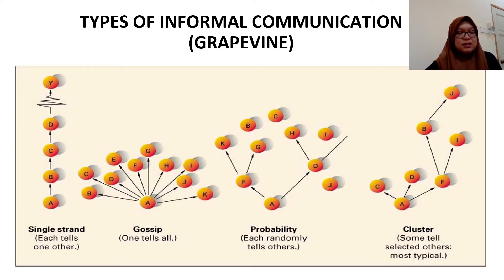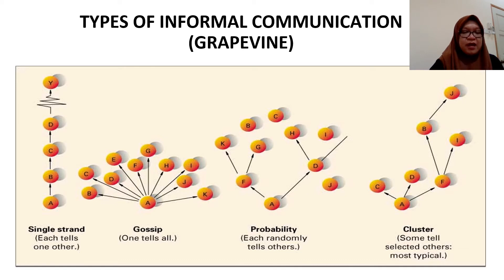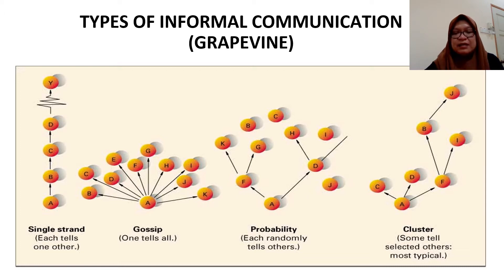The second type is gossip — one person tells all. Person A gets the information and tells everyone they know all at once, passing it to B, C, D, and everyone simultaneously. The third type is probability, where each person randomly tells others.